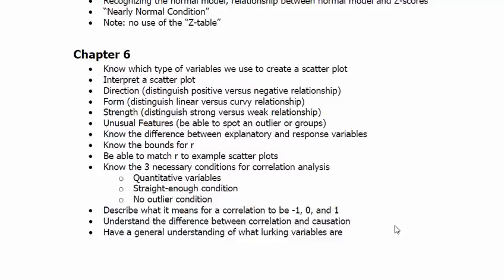Describe what it means for correlation to be negative one, zero, and one. Negative one means perfect negative correlation. So it just follows a straight line down and it's perfectly on that. Zero means that there is no linear correlation. So it could be that there's a nonlinear relationship, some sort of parabola or something like that. And one means there's perfect positive linear correlation. All the points are perfectly on a straight line that has an upward slope to some degree.